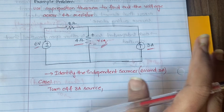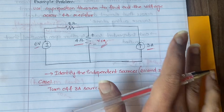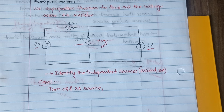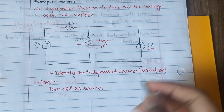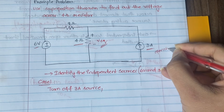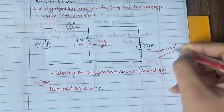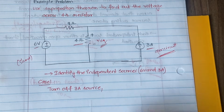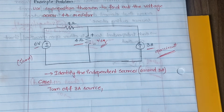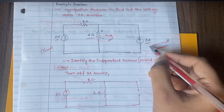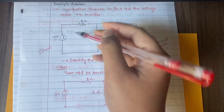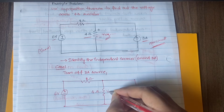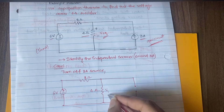First, let us consider turning off the three ampere current source. When we turn off a current source, we open circuit it. For a voltage source we short circuit, but for a current source we open circuit. The new circuit diagram is obtained by removing the three ampere source and replacing it with an open circuit — everything else, the eight ohm, four ohm resistors, and six volts source, remains as is. Let us label the voltage across the four ohm resistor as V1. Our task is to find V1.